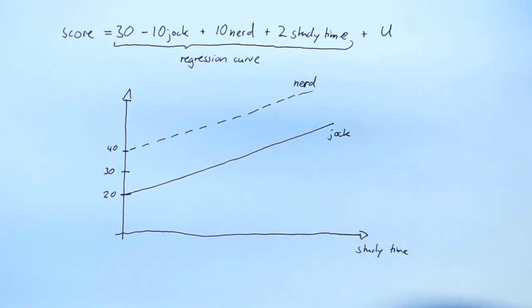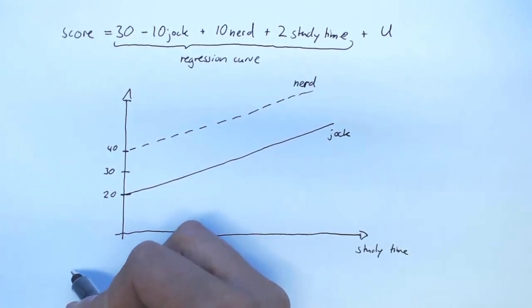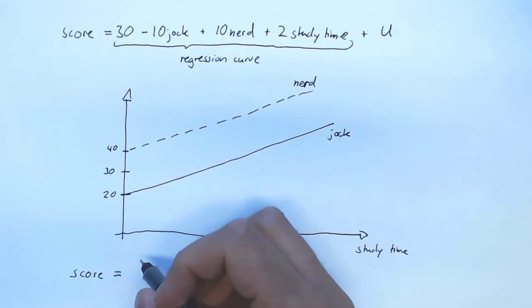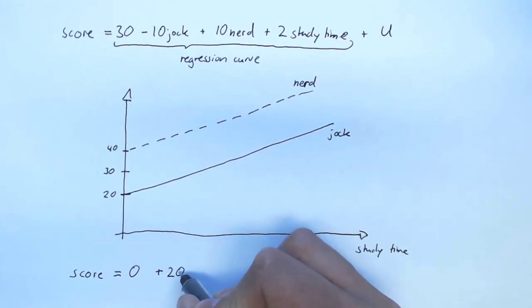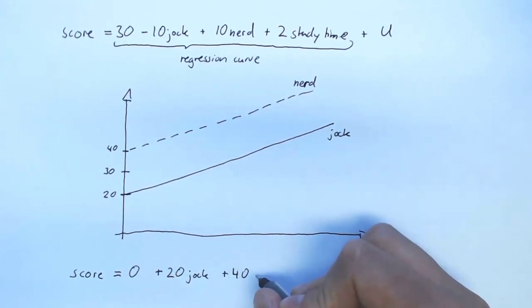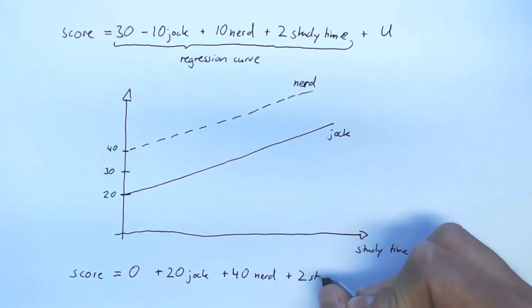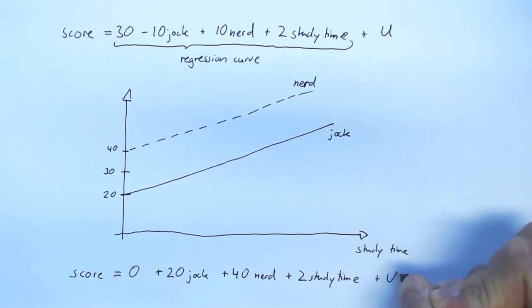For example, suppose that our model is: score equal to 0 plus 20 times jock plus 40 times nerd plus 2 times study time and our unobserved u.